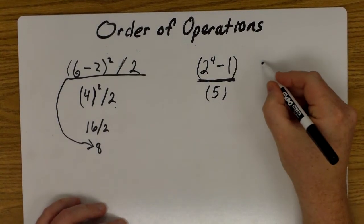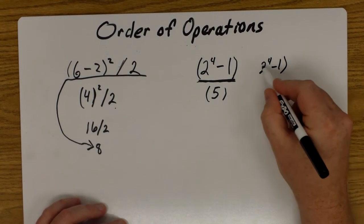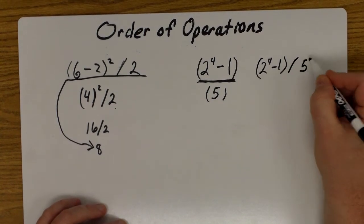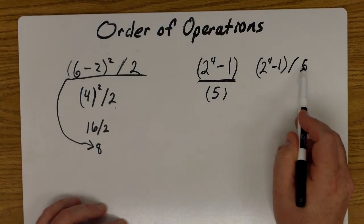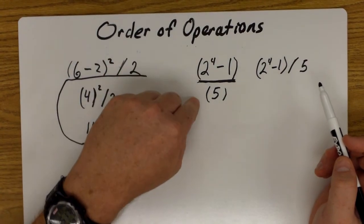So if I were writing this side by side, it would be two to the fourth minus one in parentheses, and then divide by five. If you don't put it in parentheses, it'll try to do one divided by five and then subtract it from two to the fourth. So the numerator gets done, denominator gets done, and then we come together and do the division in between.